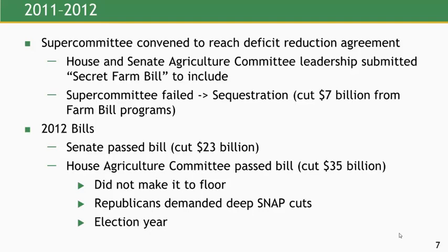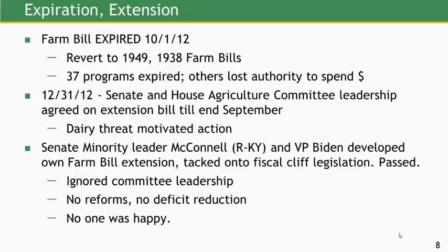In 2012, the Senate passed a Farm Bill cutting $23 billion. The House Agriculture Committee also passed a bill making much steeper cuts, but it didn't make it to the floor—partly because it was an election year, Republicans were demanding very steep cuts in SNAP, no Democrat would vote for that, and nobody wanted to be seen pushing a trillion-dollar bill during an election year. Nothing happened, and at the end of 2012, the Farm Bill actually expired—only maybe the second time ever, and this time it was not quickly dealt with.